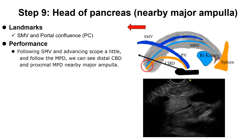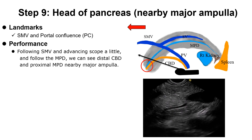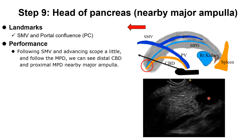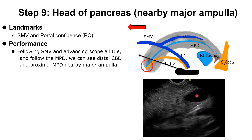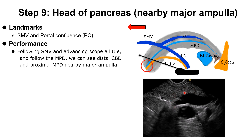Step 9: Pancreas head area. Good landmarks here are the SMV and portal confluence. Following the SMV and advancing the scope slightly, we can see the main pancreatic duct, distal CBD, and the area near the major papilla. Video clips show the main pancreatic duct area and CBD. The portal confluence connects to the SMV, and we can see the pancreatic neck area.